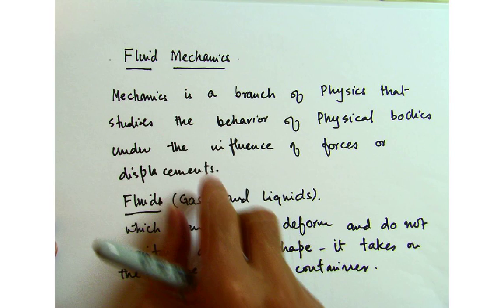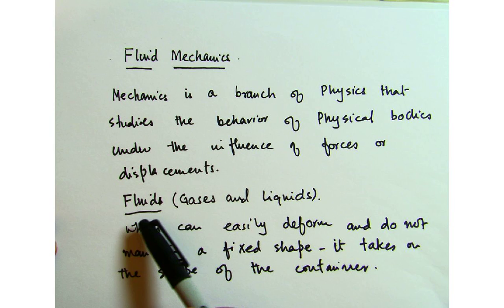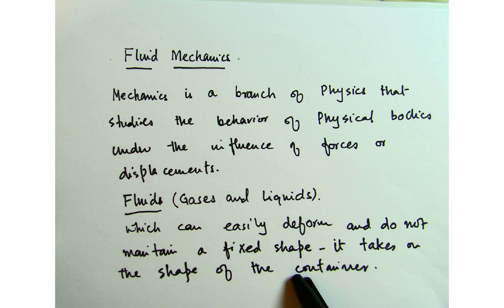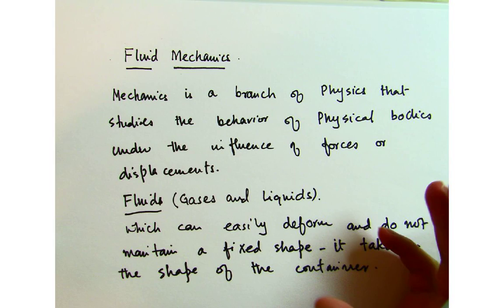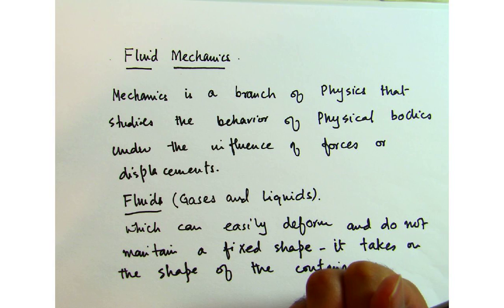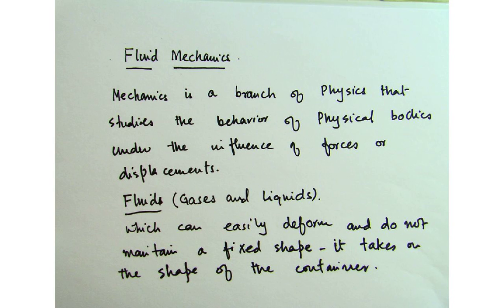From a physics text, you will notice that fluid is defined as something that includes both gases and liquids, which can easily deform and do not maintain a fixed shape — it takes on the shape of the container. Both of these definitions hold true in fluid mechanics, but we have something additional if you are taking an engineering course. We have an additional engineering definition of a fluid which I will discuss in a moment.